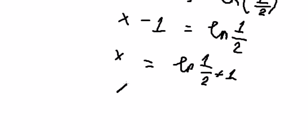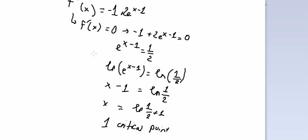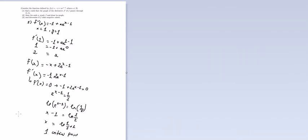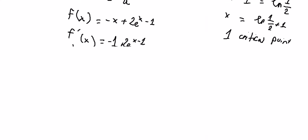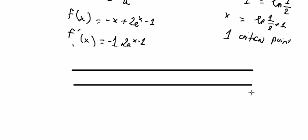So we just have only one critical point. Now, let's go to the variation table. So we got x, first derivative of the function, and the function. We got negative infinity and positive infinity, and we have the value we put in here.